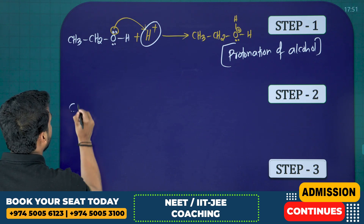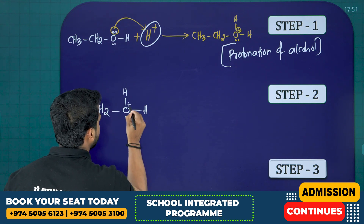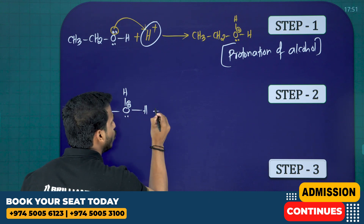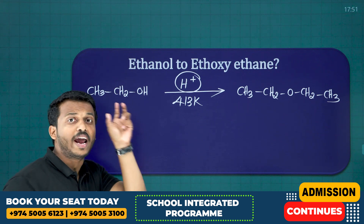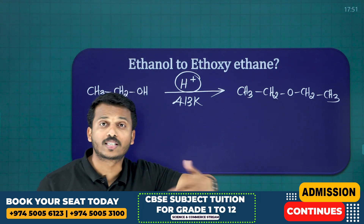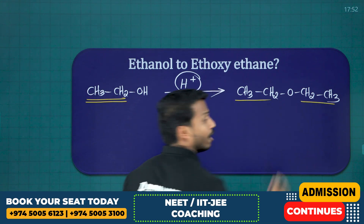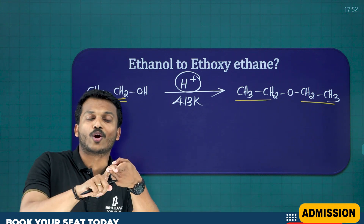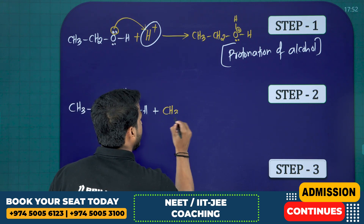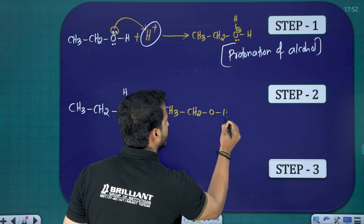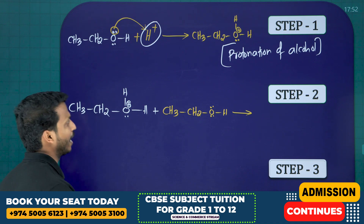Now let's take the same compound for step number two. We have CH3CH2-OH2+ with a lone pair and positive charge. Think about this: initially you have ethanol, but your product ethoxyethane contains two ethyl groups — four carbons total. Here you have two carbons, but the product has four carbons. How does that happen? One more ethanol joins. So to this compound, a second ethanol — CH3CH2OH — is ready to react.